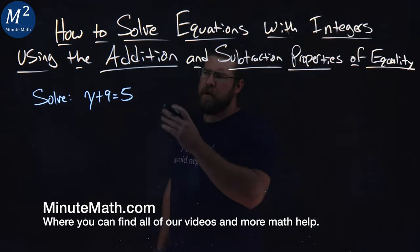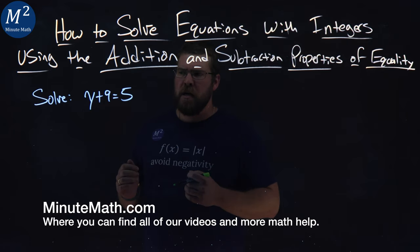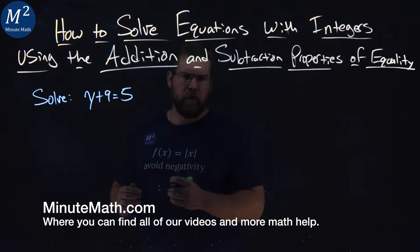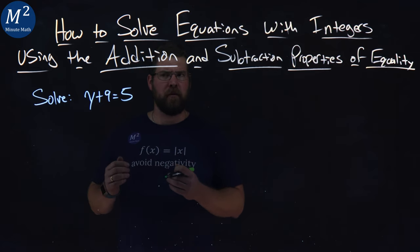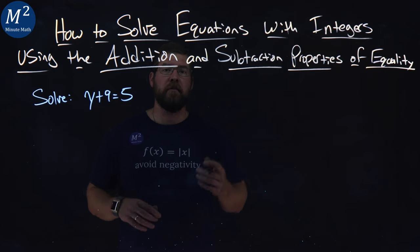We're given this problem here: solve y plus 9 equals 5. The addition property of equality, or subtraction property of equality, tells us we can add or subtract the same number to both sides of the equation.